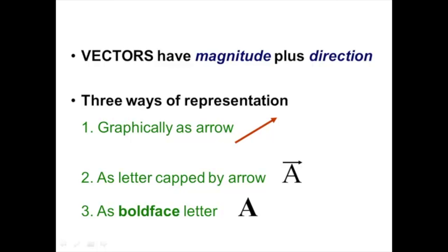In the book, sometimes they use A with an arrow over it, or a letter with an arrow over it. I will use that notation sometimes — it means that whatever that thing is, is a vector. Textbooks usually use a bold-faced letter, because it's easier than writing a letter with an arrow over it. So when you're reading in the textbook and they have a bold-faced letter, that thing is a vector.